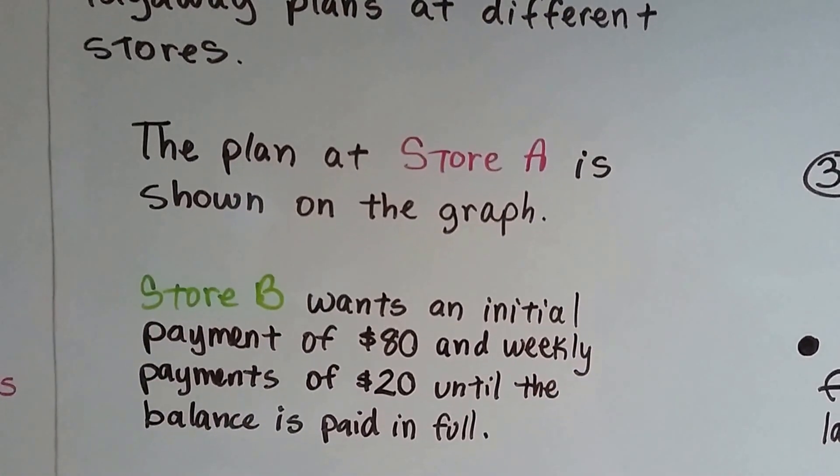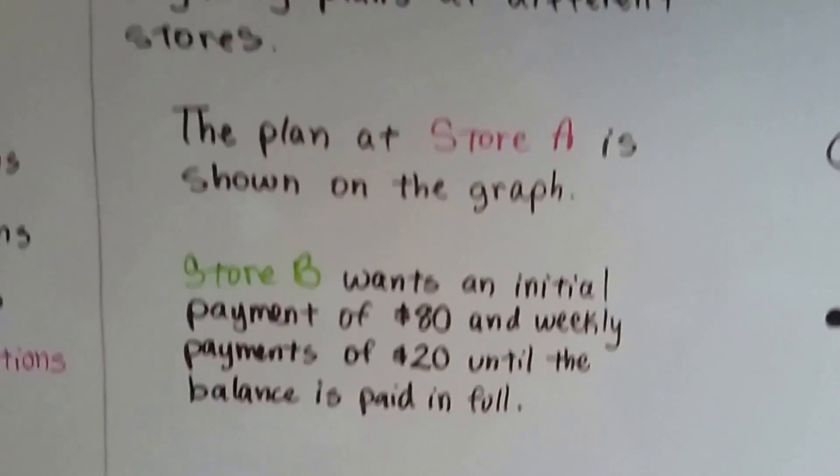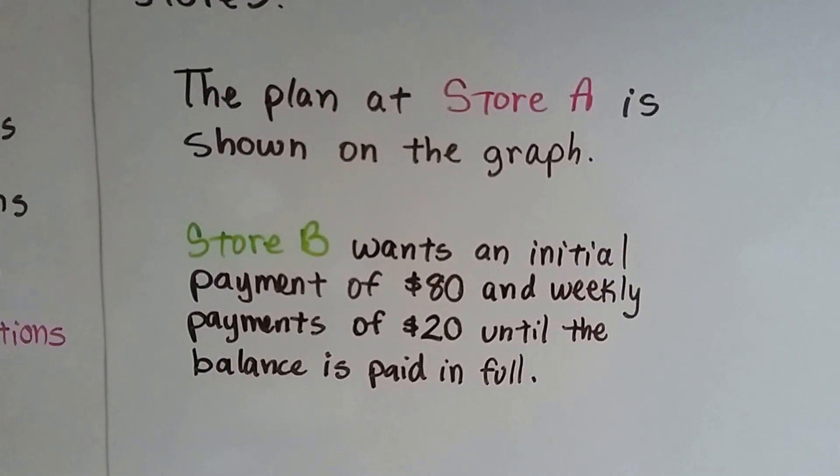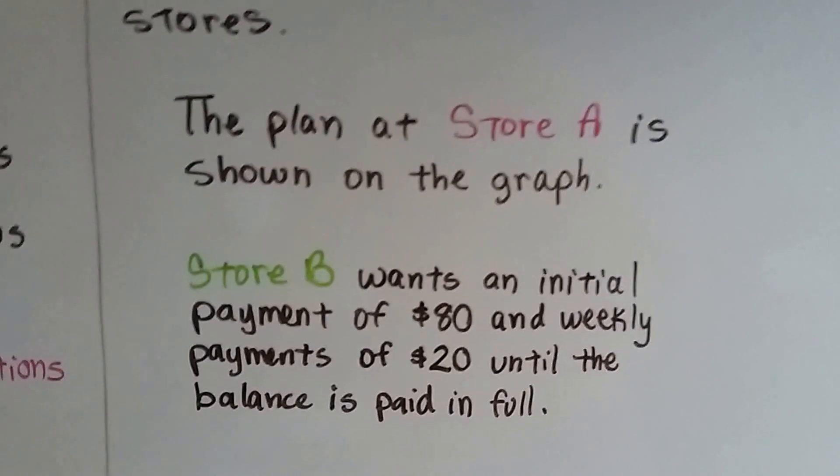The plan at store A is shown on the graph, right here in the pink. Store B wants an initial payment of $80 and weekly payments of $20 until the balance is paid in full.